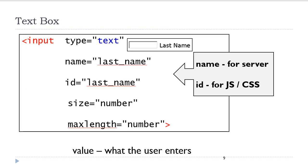The text box element is created using the input tag, and we set the value of the type attribute to text. This is the default value for the type attribute. If you omit the type attribute, you will get a text box by default. Every form element has two important attributes: the name attribute and the ID attribute. The value of the name attribute uniquely identifies this form element to the server. The value of the ID attribute uniquely identifies this form element for JavaScript and for CSS.